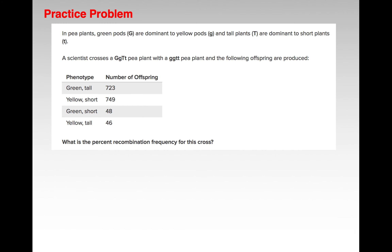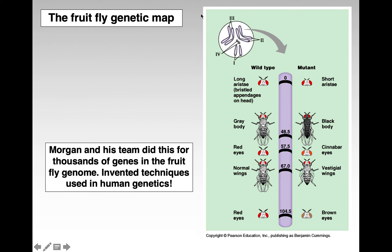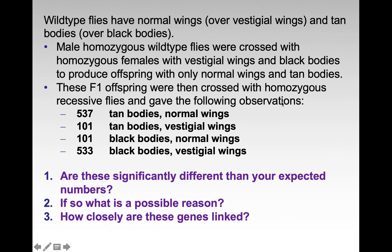Here's a practice problem you should definitely try. Looking at this, we can figure out the expected outcome, which is 25% to 25% to 25% to 25%, but we see that's not right. The smaller numbers are the recombinants; the larger numbers are going to be the parental. Thomas Hunt Morgan used this to create an actual fruit fly genetic map, showing where all the genes are on the four chromosomes of the fruit fly.